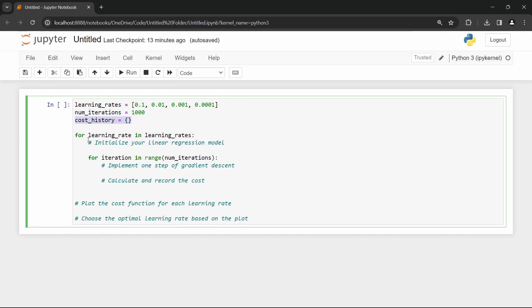Next, for each learning rate in the range, we perform gradient descent and record the cost after each iteration.